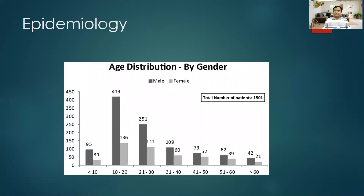The epidemiology of this condition — as you can see in this chart — shows it is more common in the male population, and the common age of presentation is between 10 to 30. So it is a disease of young adults, though it can be seen in any age group. In my clinical experience it has a bimodal distribution.